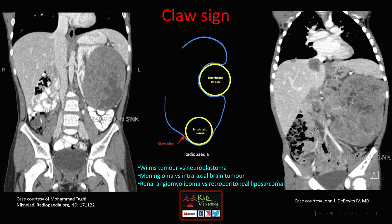Here you can see another case with a large heterogeneously enhancing mass lesion showing necrosis, extending along the left renal vein, with a tumor thrombus in the IVC and probable metastasis in the liver. These are different cases of nephroblastoma demonstrating the claw sign.